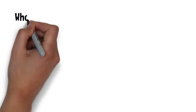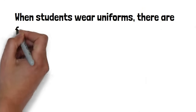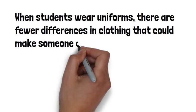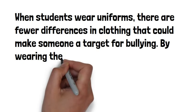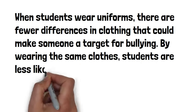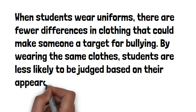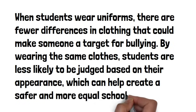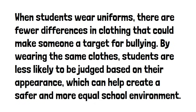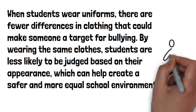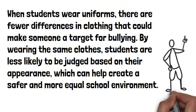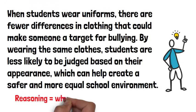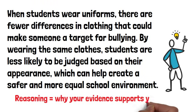When students wear uniforms, there are fewer differences in clothing that could make someone a target for bullying. By wearing the same clothes, students are less likely to be judged based on their appearance, which can help create a safer and more equal school environment. Now, this is an example of reasoning.